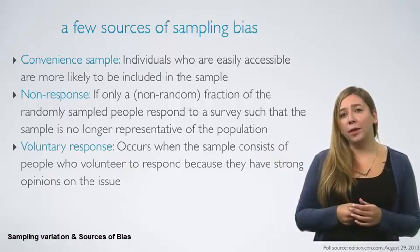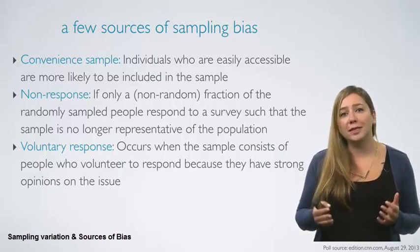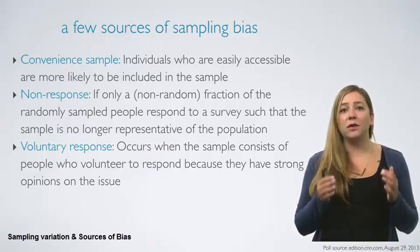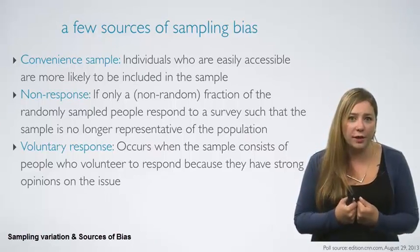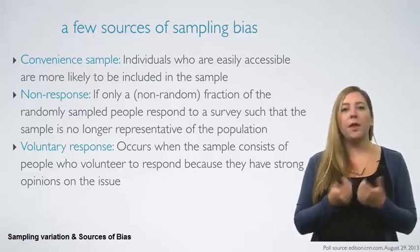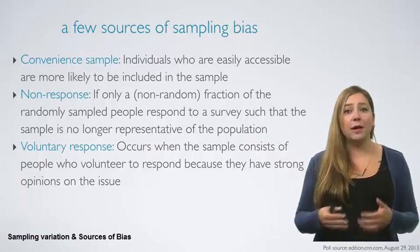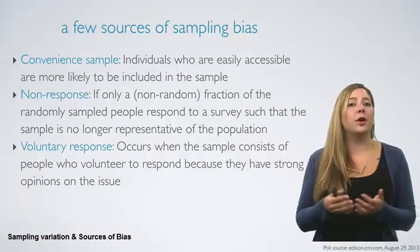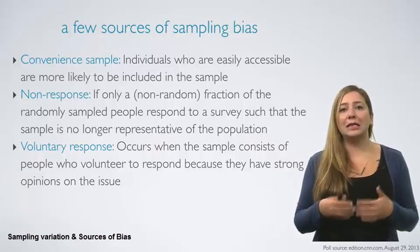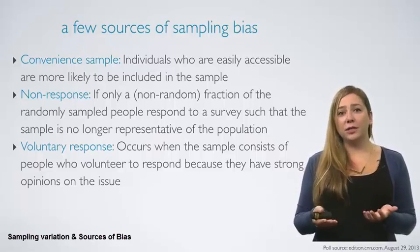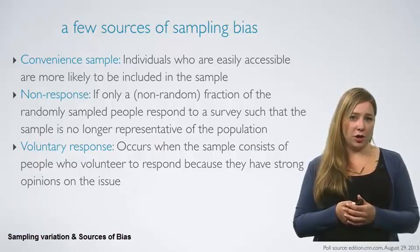A similar sampling bias is called voluntary response bias, which occurs when the sample consists of only people who volunteer to respond because they have strong opinions on the issue. For example, say you place polling machines at all bus stops and metro stations in your city, but only those who choose to do so actually take the time to vote and express their opinion on the recent increase in public transportation costs.